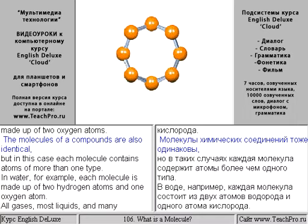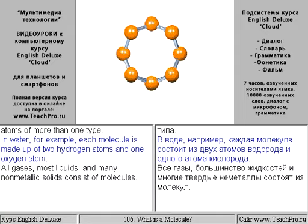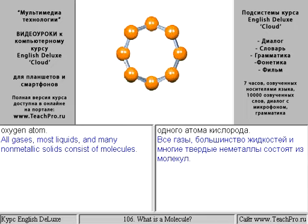The molecules of a compound are also identical, but in this case, each molecule contains atoms of more than one type. In water, for example, each molecule is made up of two hydrogen atoms and one oxygen atom. All gases, most liquids, and many non-metallic solids consist of molecules.